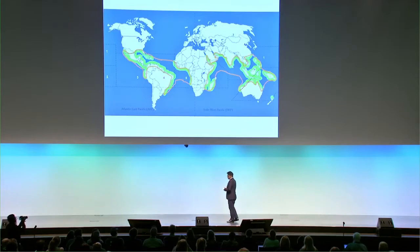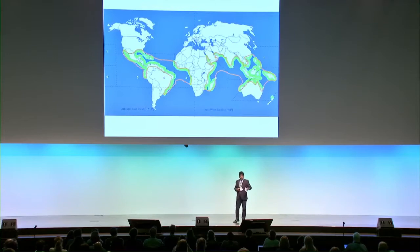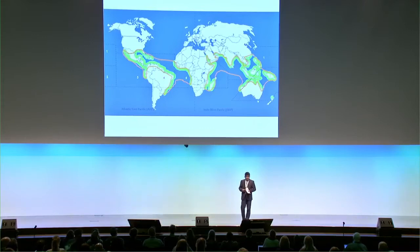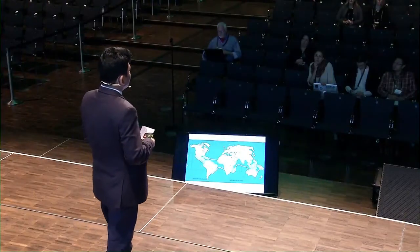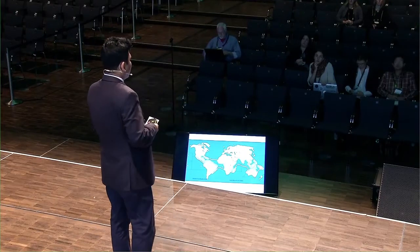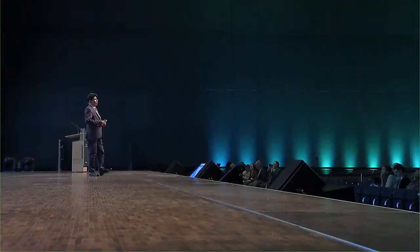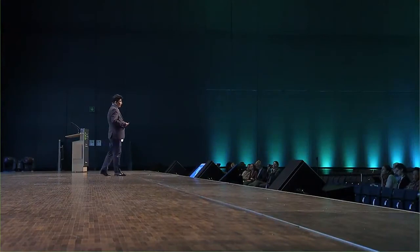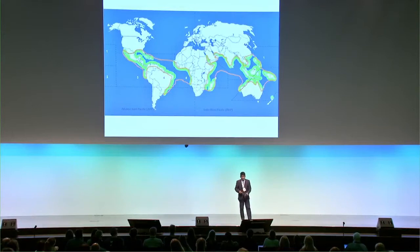Mangroves in the world are found only between 25 to 35 degrees north and 35 degrees south latitude. There are two main zones: the Atlantic East Pacific and the Indo-West Pacific regions, which contain the diversity of mangrove forest or mangrove wetland areas. The Asia-Pacific is the hotspot of mangrove biodiversity, and Bangladesh's Sundarbans is located within the Indo-West Pacific region.